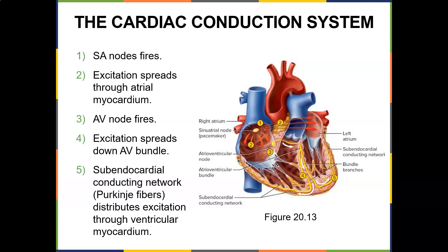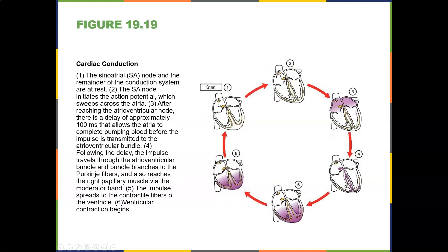The AV node fires, then excitation spreads down the AV bundle, and the sub-endocardial conducting network (Purkinje fibers) distributes excitation through the ventricular myocardium. The SA node initiates the action potential across the atria. After reaching the AV node there is a delay of approximately 100 milliseconds, allowing the atria to complete pumping blood before the impulse is transmitted. Following the delay, the impulse travels through the AV bundle and bundle branches to the Purkinje fibers and also reaches the right papillary muscle via the moderator band, then spreads to the contractile fibers of the ventricle to begin ventricular contraction.